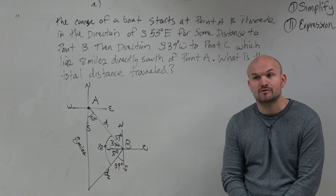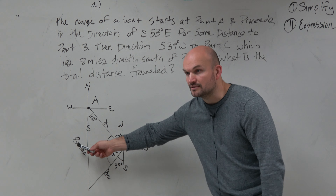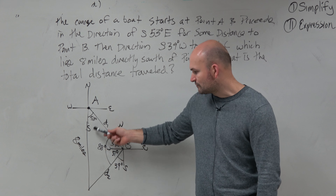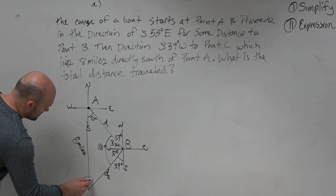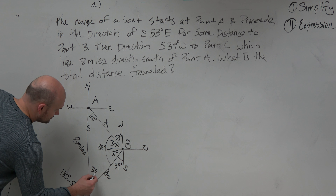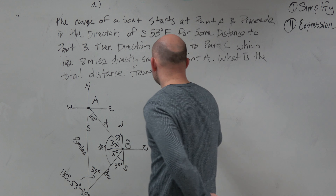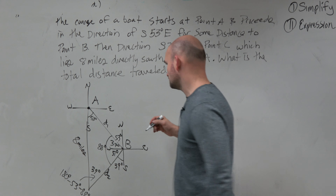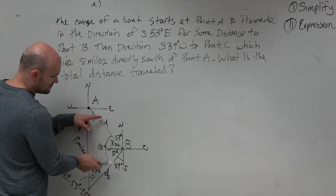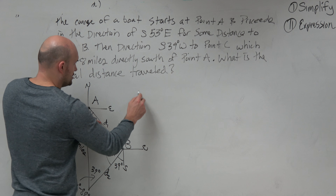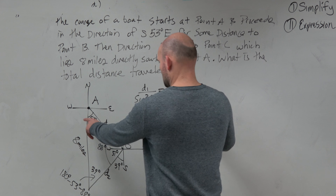So therefore this becomes 37 degrees — wait, and therefore this is 88 degrees. Is everybody okay with how I drew the picture? We haven't even done any pre-calculus yet — we just read a word problem, broke it down, and did a little geometry. Now we recognize that this does not contain a right triangle, so therefore it's an oblique triangle. The only thing we've learned with oblique triangles is we can use the law of sines. But to use the law of sines, you have to have a ratio — and we need to figure out D1 and D2.